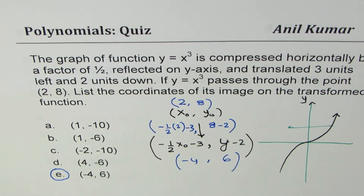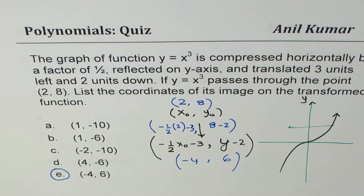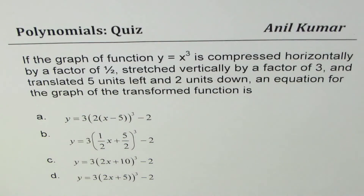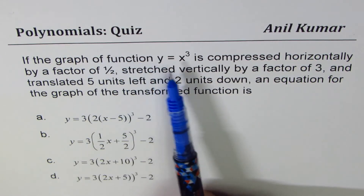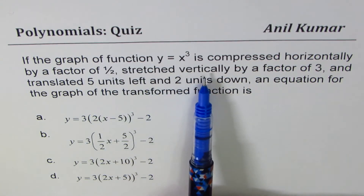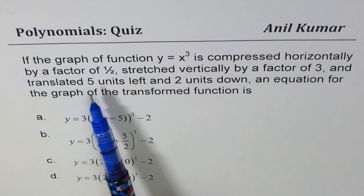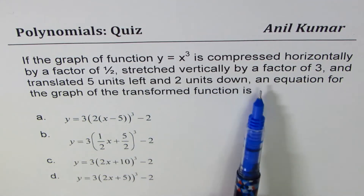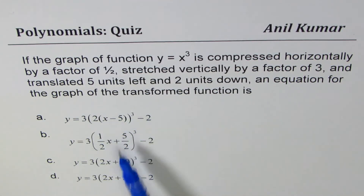I hope you understand how to find the image points from given transformations. Now let's move on to the last question — multiple choice on polynomial transformations. The graph of function y equals x cube is compressed horizontally by a factor of half, stretched vertically by a factor of three, and translated five units left and two units down. An equation for the graph of the transformed function is one of the given options.